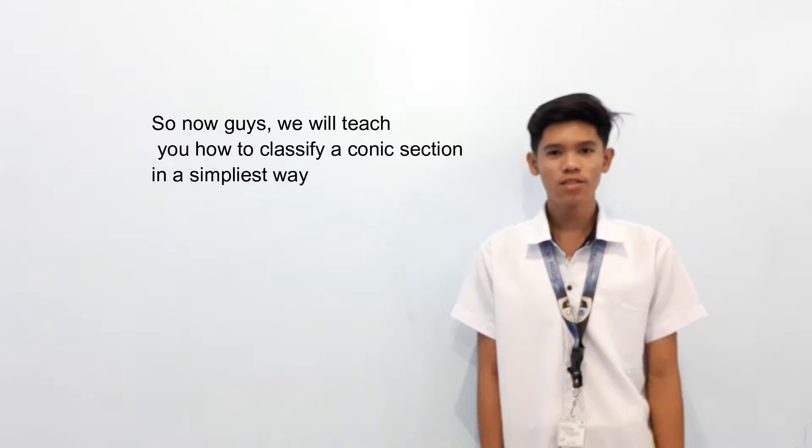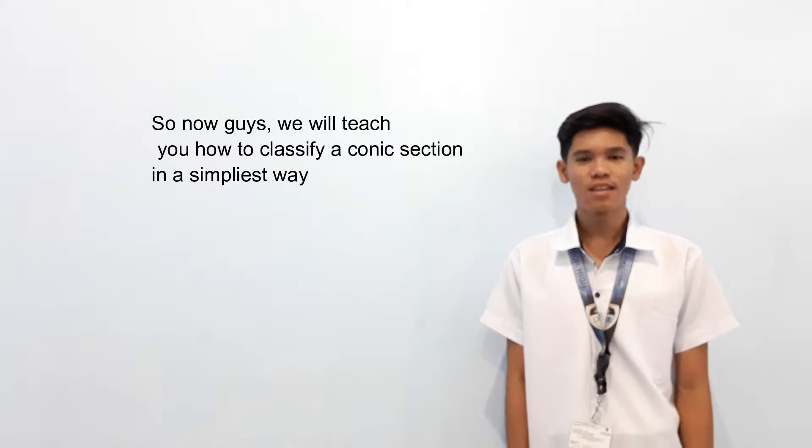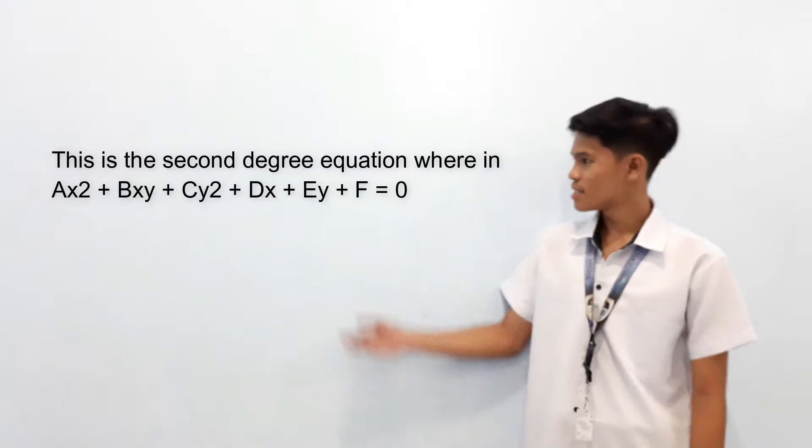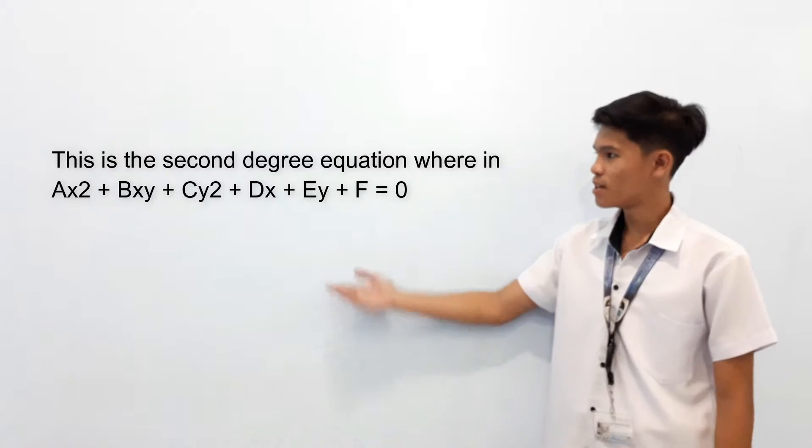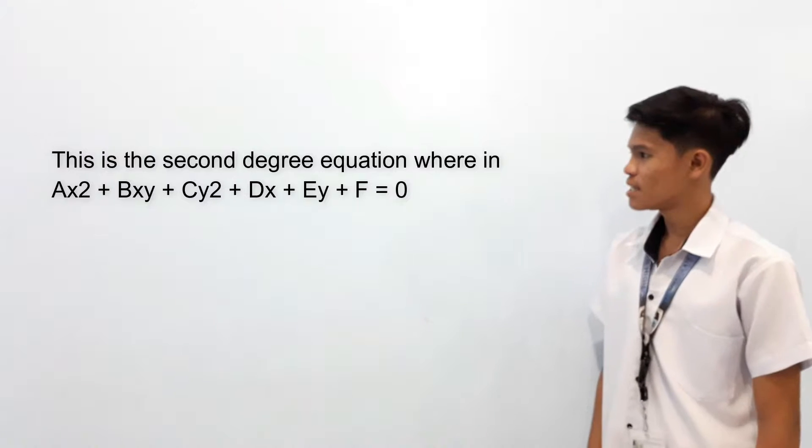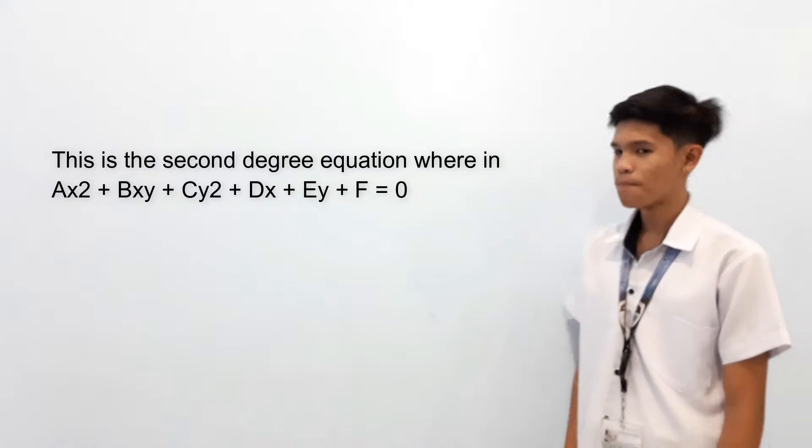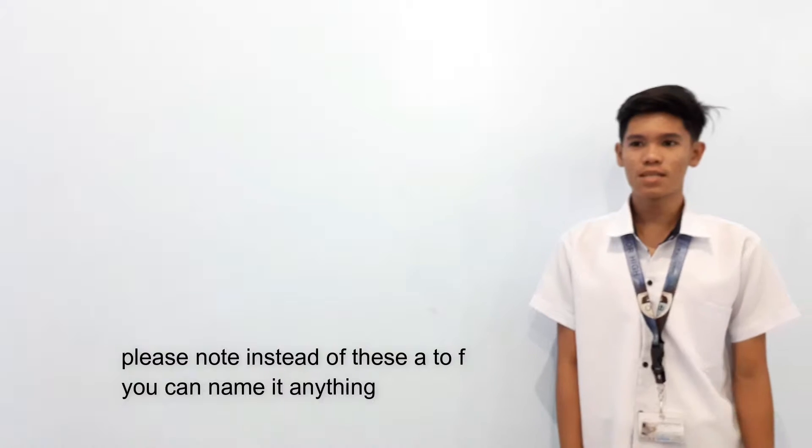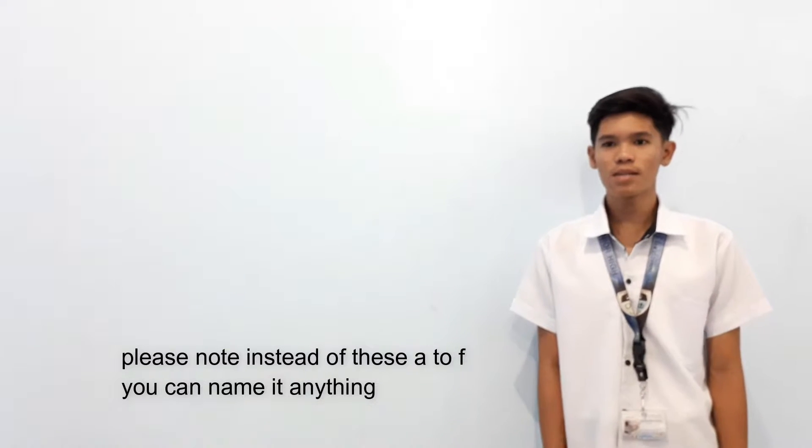So now guys, we will teach how to classify a conic section in the simplest way. This is the second degree equation: Ax² + Bxy + Cy² + Dx + Ey + F = 0. Please note, instead of A to F, you can name it anything.